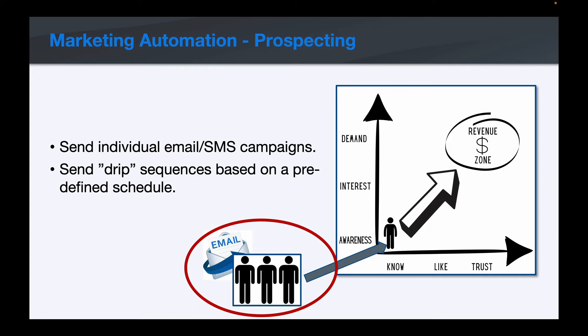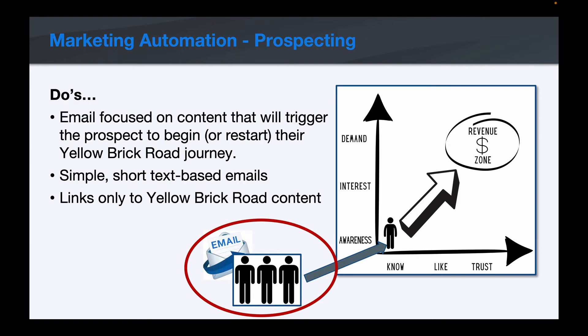To get prospects into the revenue zone, we can send individual email campaigns or drip campaigns based on a predefined schedule — things you've probably done before with email or marketing automation tools. Key things to keep in mind: make sure the email is focused on content that will trigger the prospect to begin or restart their yellow brick road journey, with a clear call to action pointing them toward that journey. Keep emails very short, simple, and text-based — not a lot of images or graphics — and only link to yellow brick road content.